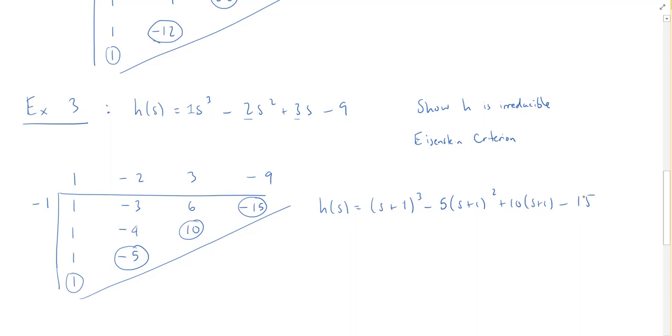Right? 5² is 25. 5 does go into 10, 5 does go into 5, and we don't have a 5 in here, which makes us happy. So by Eisenstein, so by the Eisenstein criterion with p = 5, h is irreducible.